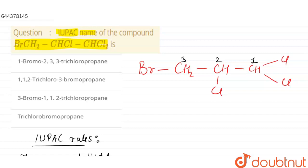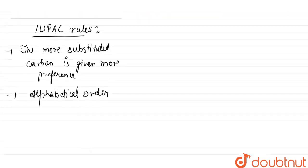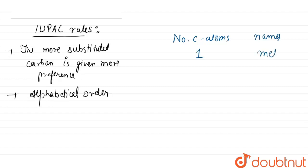But before that, I am writing the number of carbon atoms and the names that we use for them. For one carbon atom it is meth, for two carbon atoms it is eth, for three it is prop.